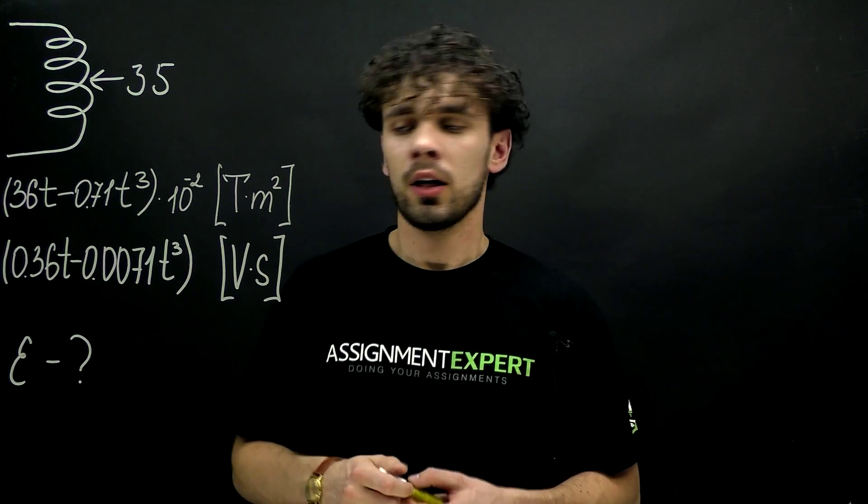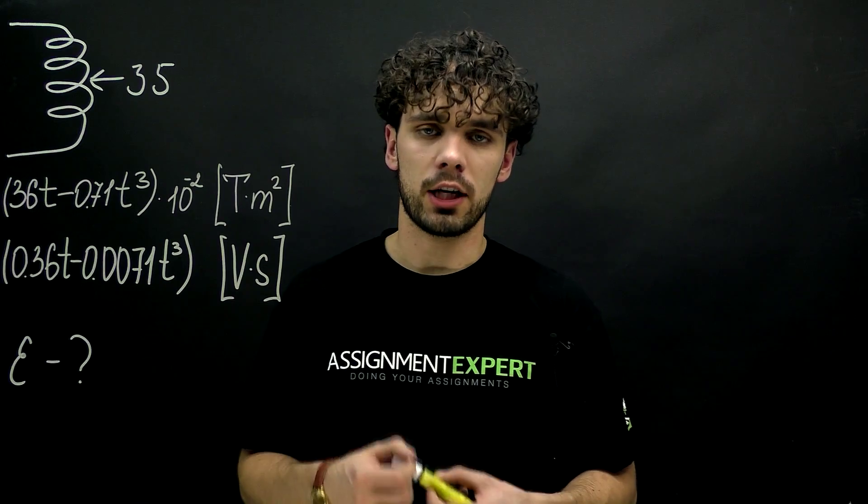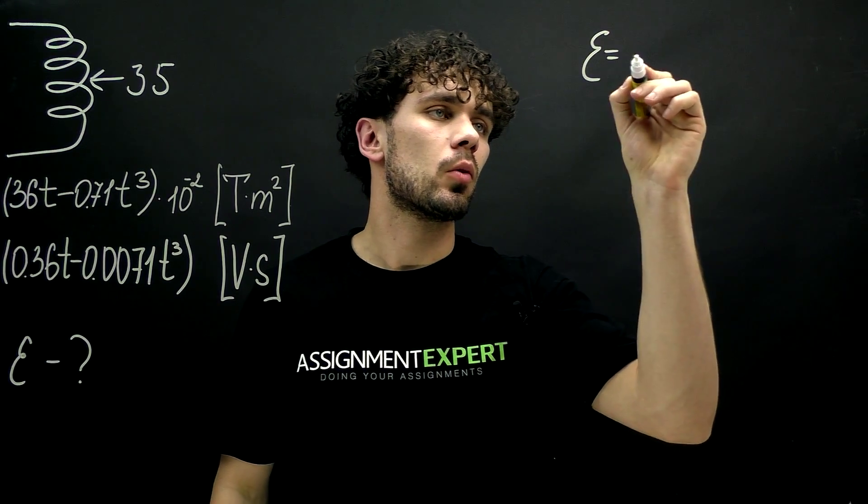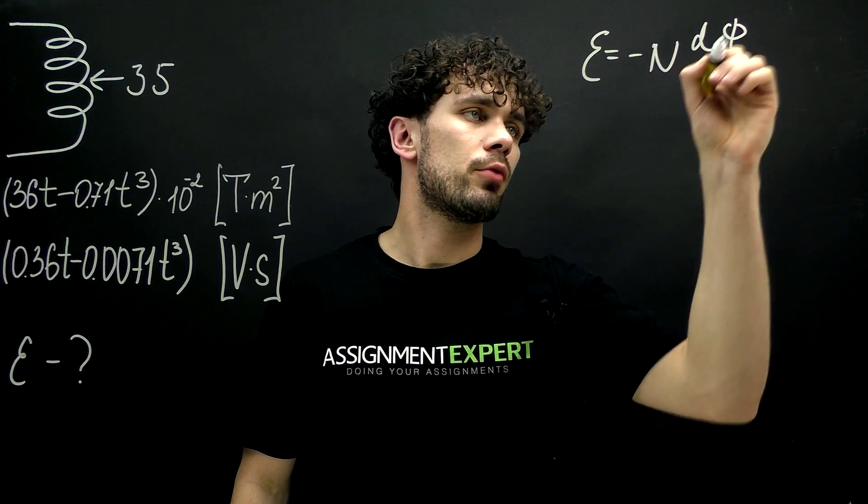So let's begin. We can find EMF using Faraday's law of induction. It goes like this: Epsilon equals negative n times derivative of phi with respect to t.